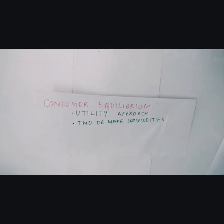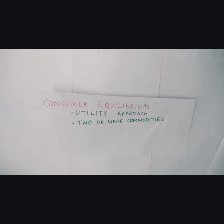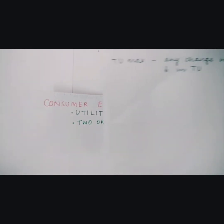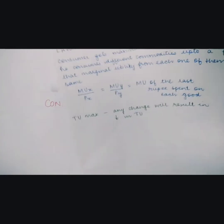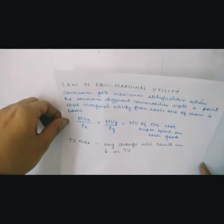The concept of consumer equilibrium using the utility approach in the case of two commodities can be extended to two or more commodities as well. Marshall explained the concept of consumer equilibrium in the case of two or more commodities with the help of the law of equimarginal utility.